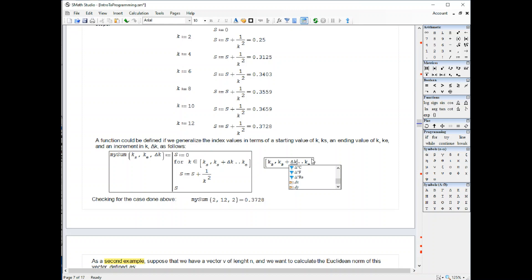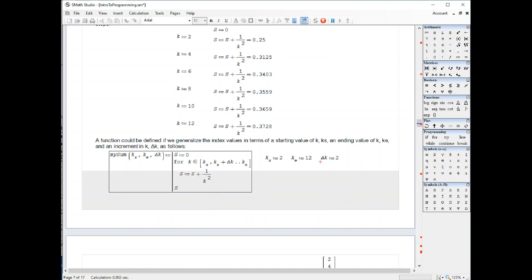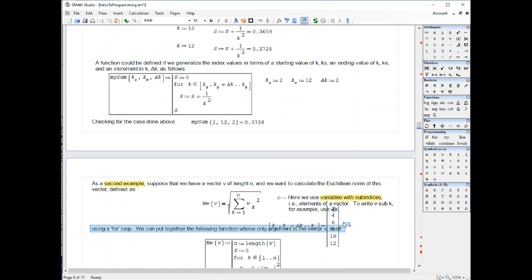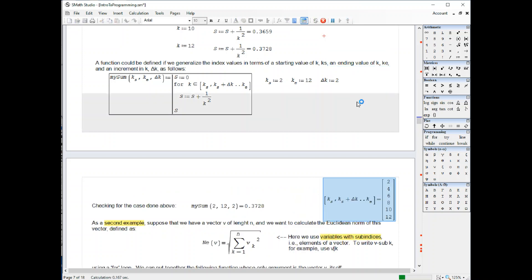And of course, in this case, it's going to give me an error because I haven't defined those things, but if I define k.s as my initial value of 2, in this case, and k sub e as 12, and then delta k equal 2, then I do obtain, let me drag it over here.